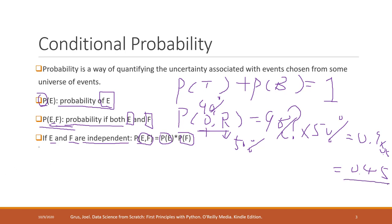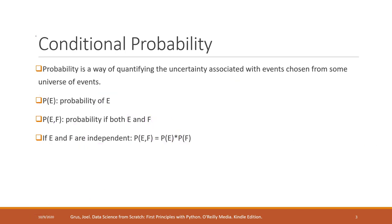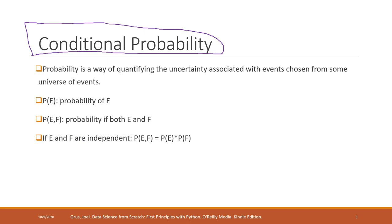So 0.9 times 0.5 equals 0.45. That is the joint probability when two events are independent. A slightly tricky part is what we call conditional probability. In the real world, nothing is truly totally independent of each other.